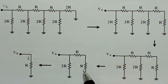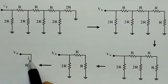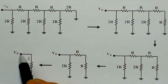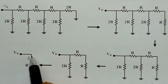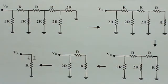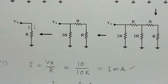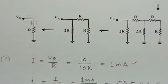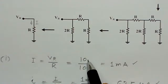After full simplification, the network reduces to a single equivalent resistor R. With the value of Vr given, we can determine the current I. The current I equals Vr divided by R, which is 10 volts divided by 10 kilo ohms, giving 1 milliampere.